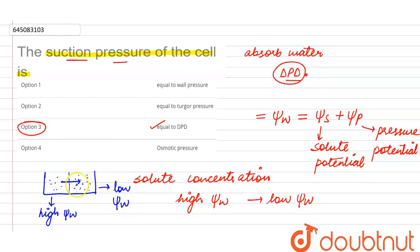So the water will start moving from a higher ψW to lower ψW, that means from a higher DPD to the lower DPD.